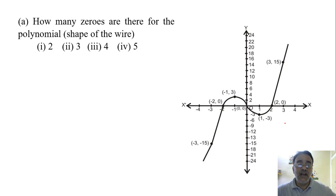This is the first question. How many zeros are there for the polynomial shape of the wire? So we know that the number of zeros is the points where the curve intersects the x-axis.